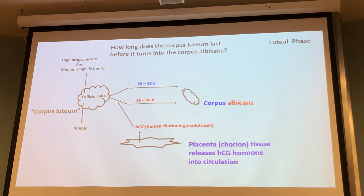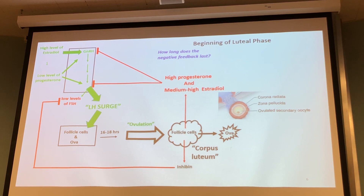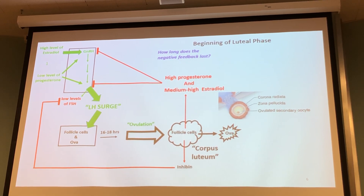One thing to mention: when we get to the high estradiol and low progesterone state that drives the massive LH release, the pulsatile frequency of GnRH speeds up to about every 30 to 60 minutes — a much faster pulse release. Then when we have our high level of progesterone after ovulation, it slows back down again. It's the high estradiol on low progesterone that tells the hypothalamus to speed up.